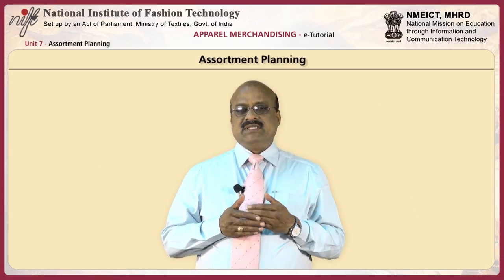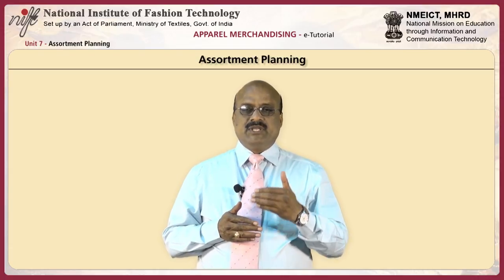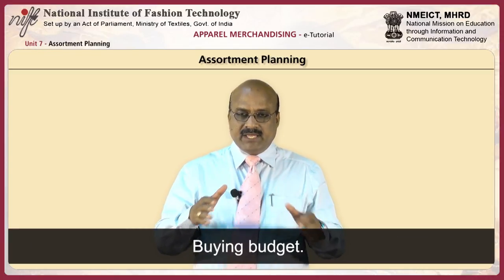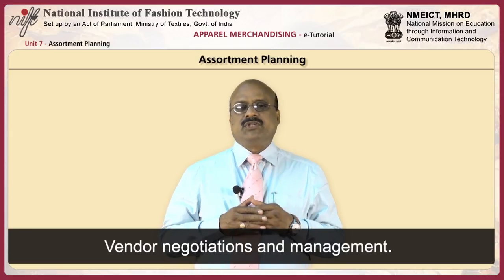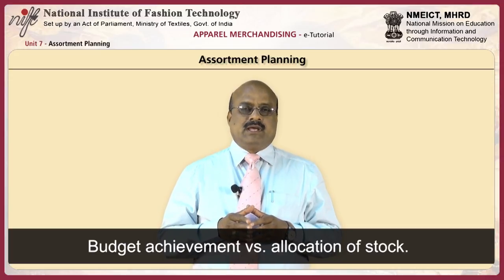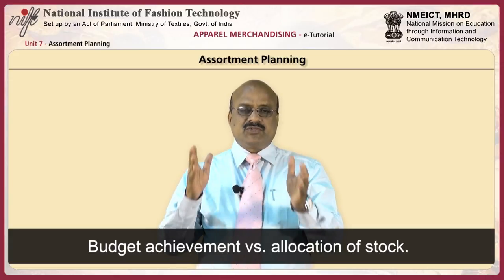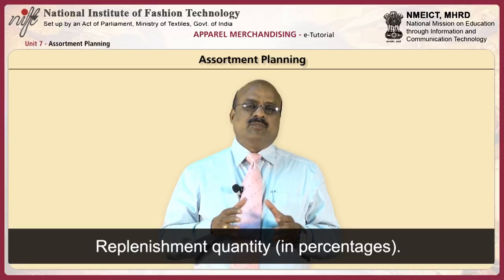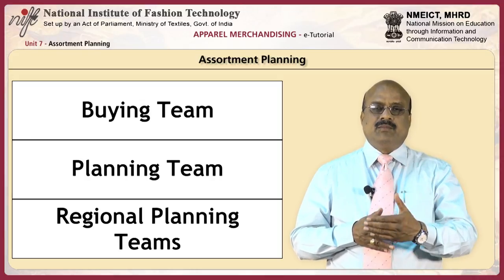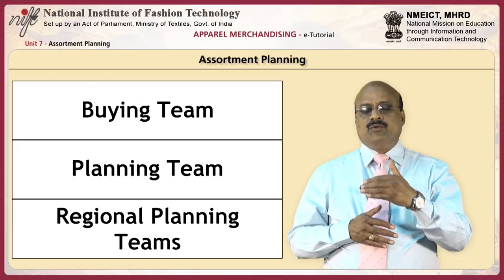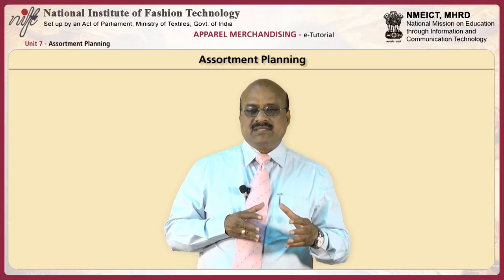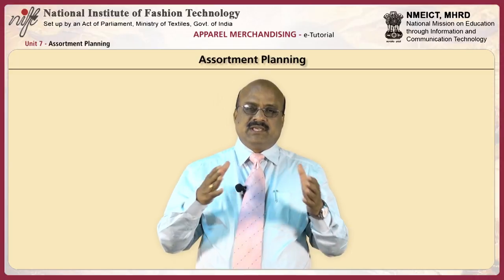The buying for a particular season happens two seasons prior, based on factors such as quantity and style options to be launched, buying budget, vendor negotiations and management, stock on hand, sales data of the product, budget achievement versus allocation of stock, and replenishment quantity in percentages. After consideration of these factors, the buying team and planning team work out the open-to-buy for the coming season. Open-to-buy determines the quantity to be purchased for the particular season and also helps in stock versus sales projection.